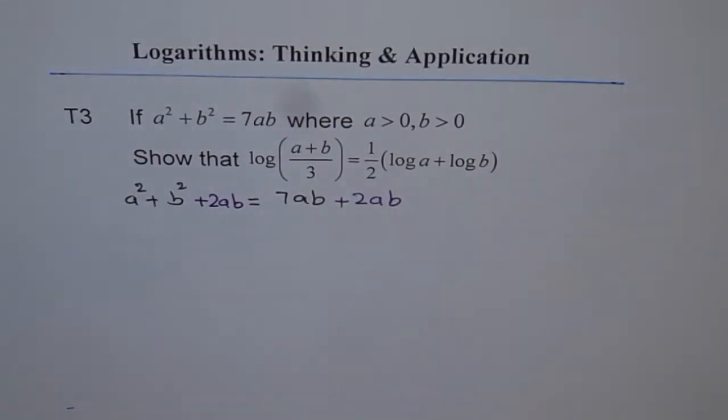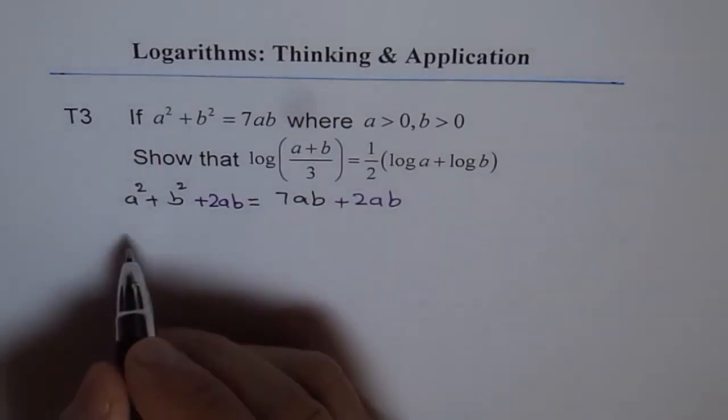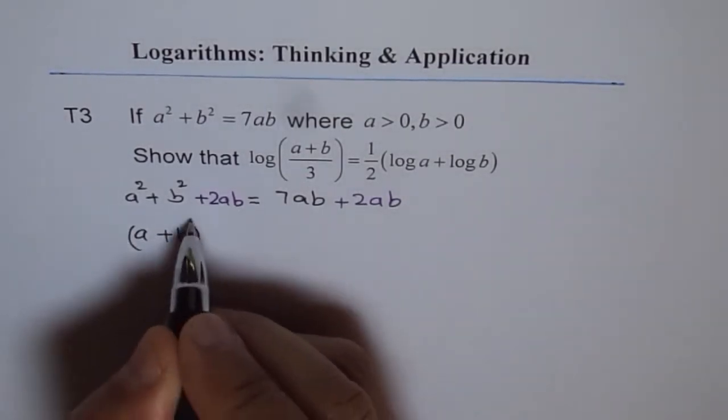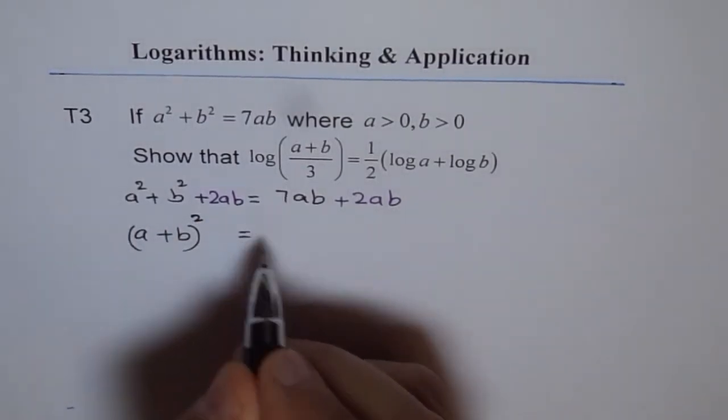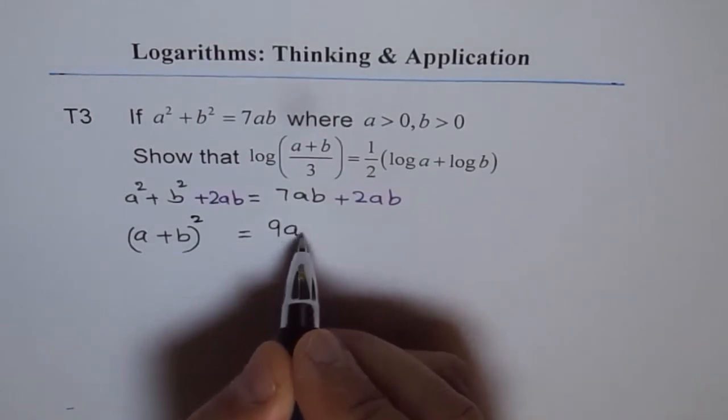That is my first step to solve this problem. So this becomes a plus b whole square on this side and 9ab on the right.